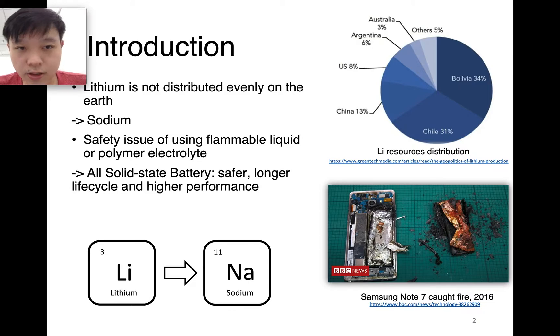As we all know, lithium-ion battery is one of the most widely used and commercialized techniques for mobile electronic devices like laptops and mobile phones. However, lithium-ion battery is not perfect. There are two reasons. First of all, lithium is not distributed evenly on the earth. As you can see on the right side of the pie chart, lithium is mostly distributed in Bolivia and Chile.